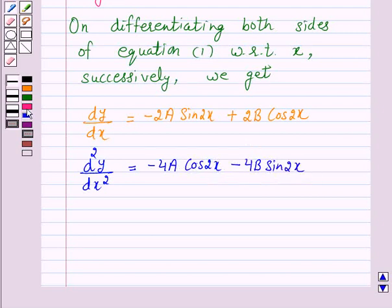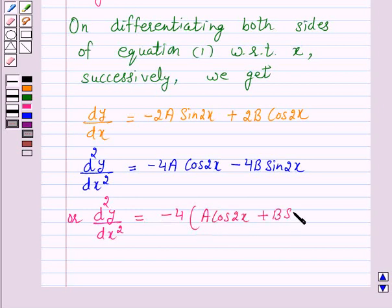Or this can be written as d²y over dx² equals minus 4 times (A cos 2x plus B sin 2x). Let us give this as equation number 2.